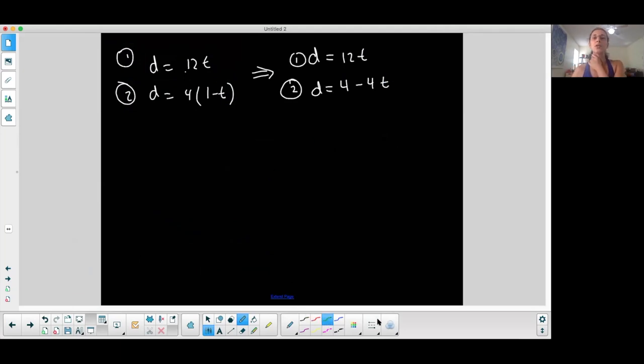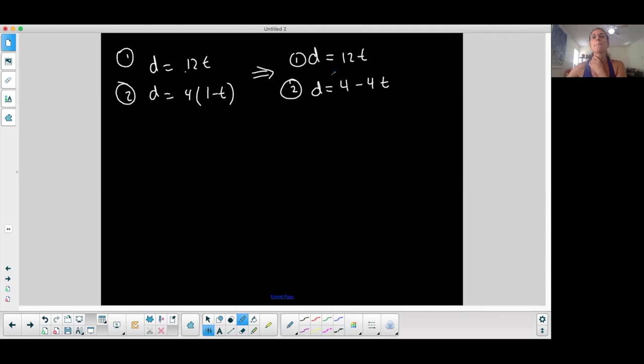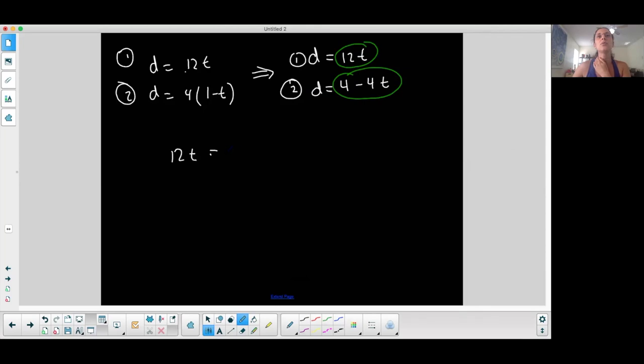And if you look at this, substitution is easy because of the fact that D is equal to this and D is equal to this, which means that I can go ahead and substitute each of these expressions for D. So 12T is equal to 4 minus 4T. And then I solve. I'm going to add 4T to both sides. And I get 16T is equal to 4. Divide both sides by 16. And I get T is equal to 4 over 16, which is one fourth, which is 0.25 hours.